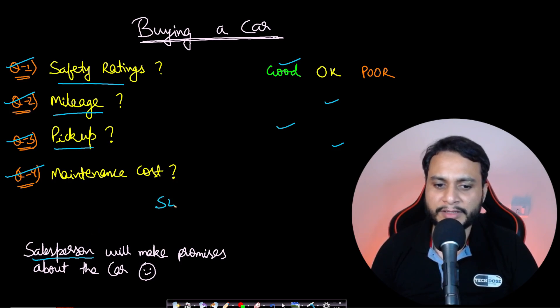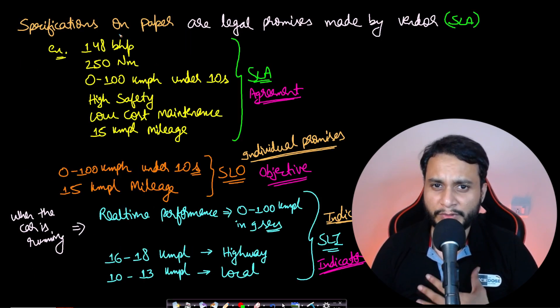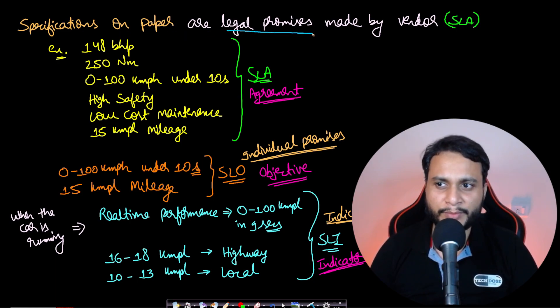There will be certain specifications on paper which are actually the legal promises made by the vendor, and that actually represents your service level agreement. In this case, it can be the specification of the car mentioning 148 BHP, 250 Newton meter torque, and then they can also mention like 0 to 100 under 10 seconds. They can mention high safety, low cost maintenance, 15 kmpl mileage, and so on.